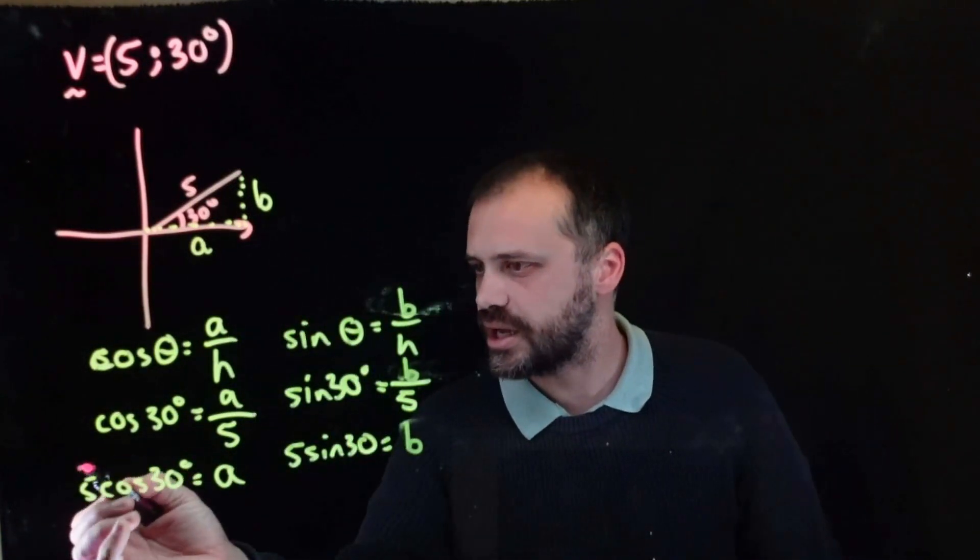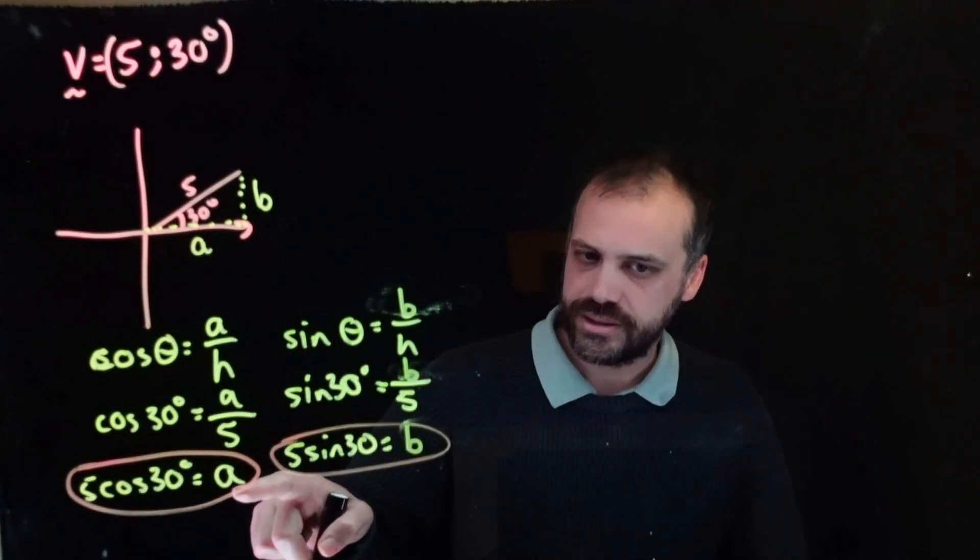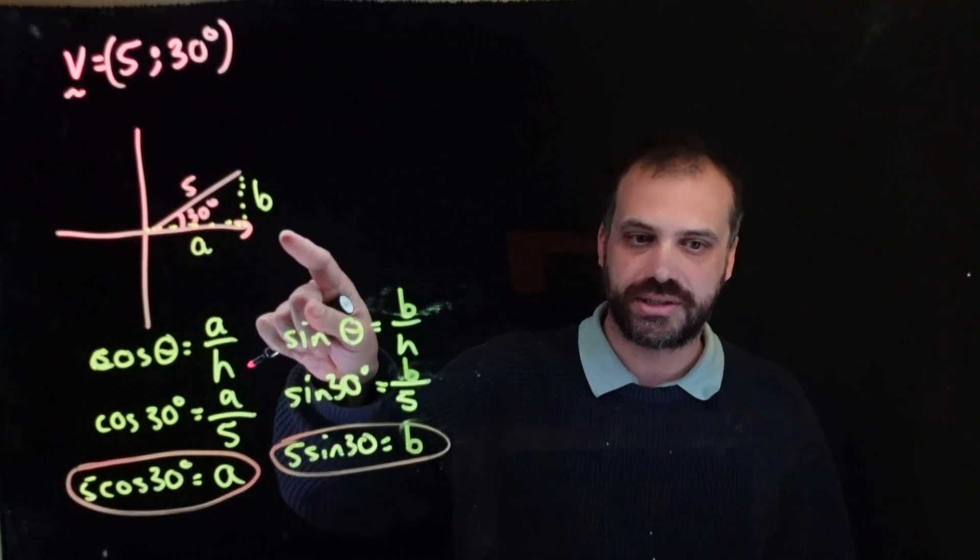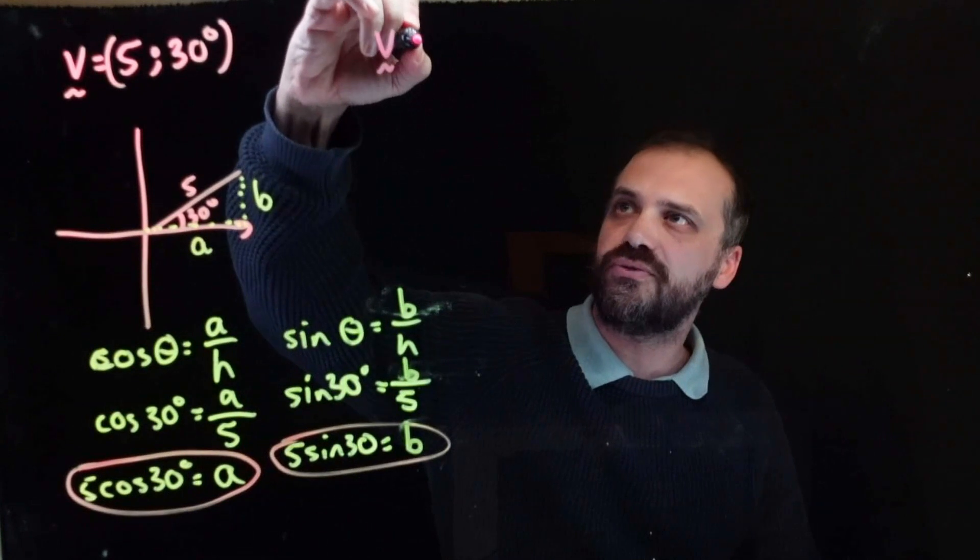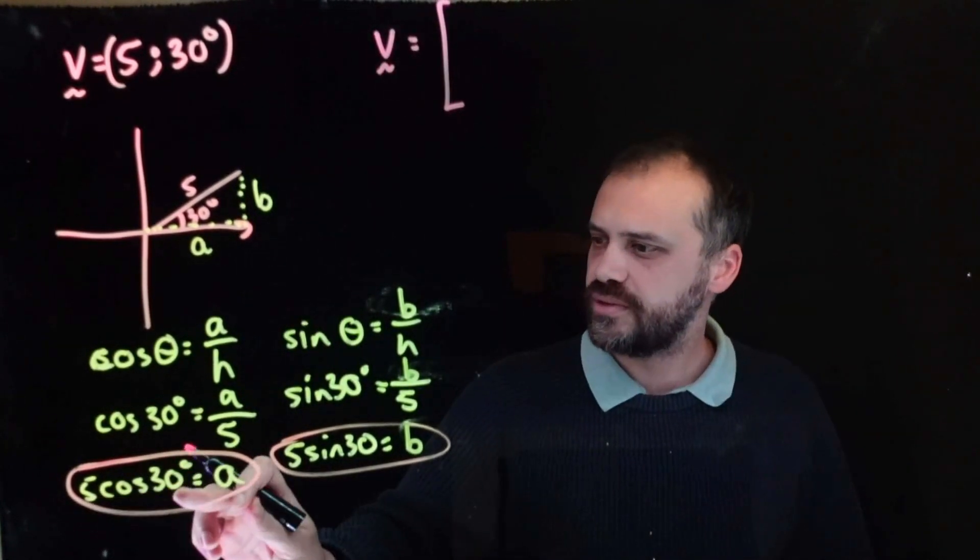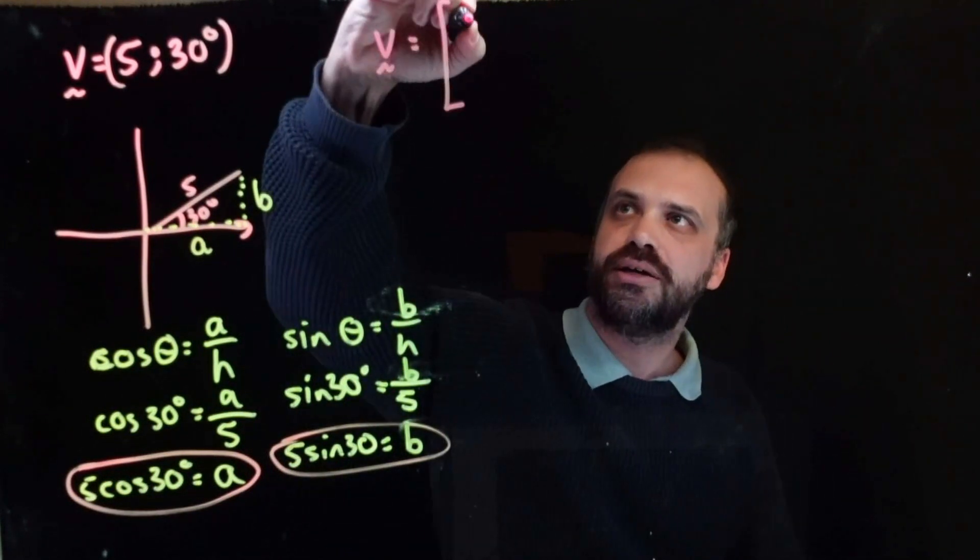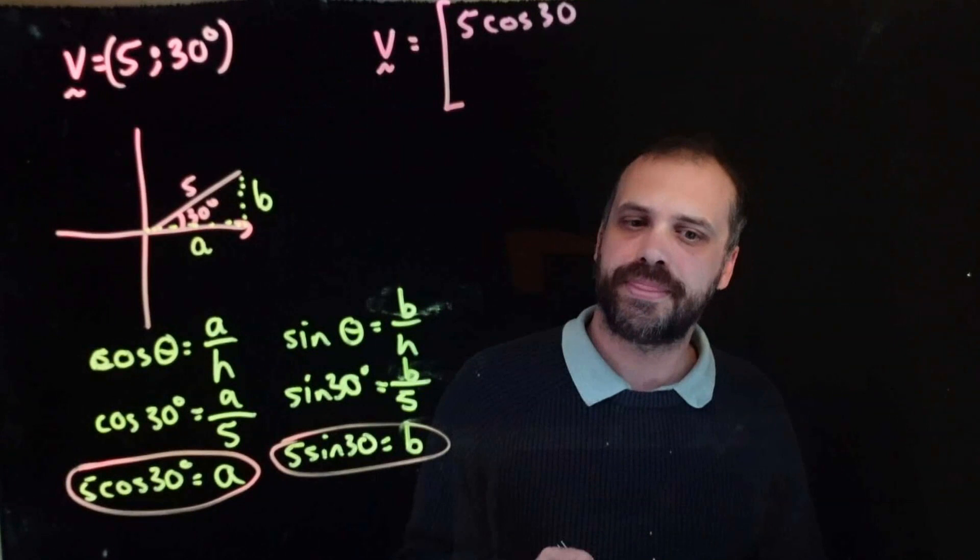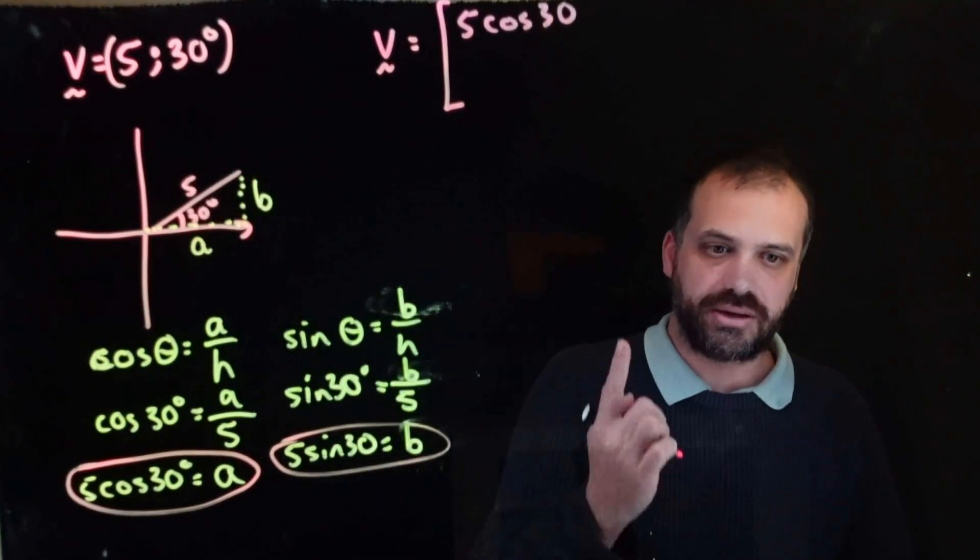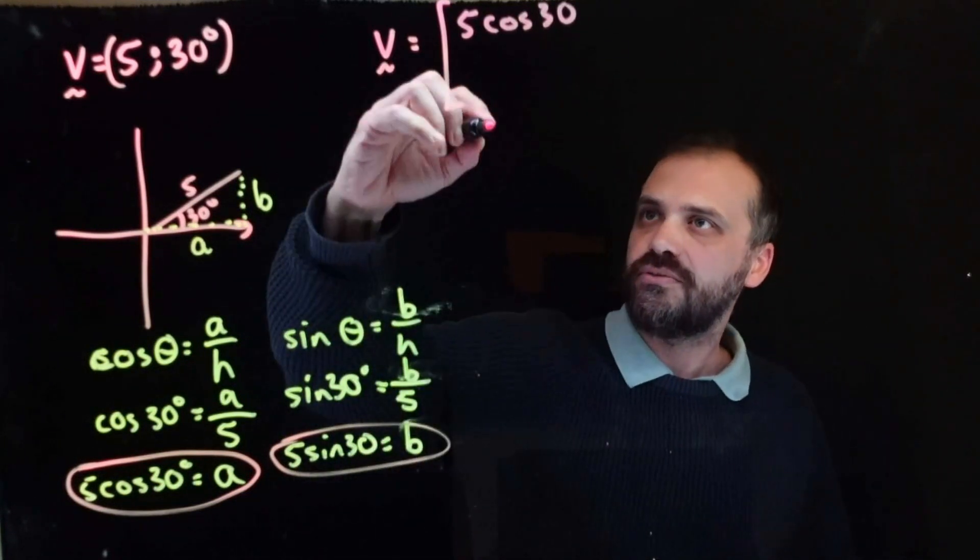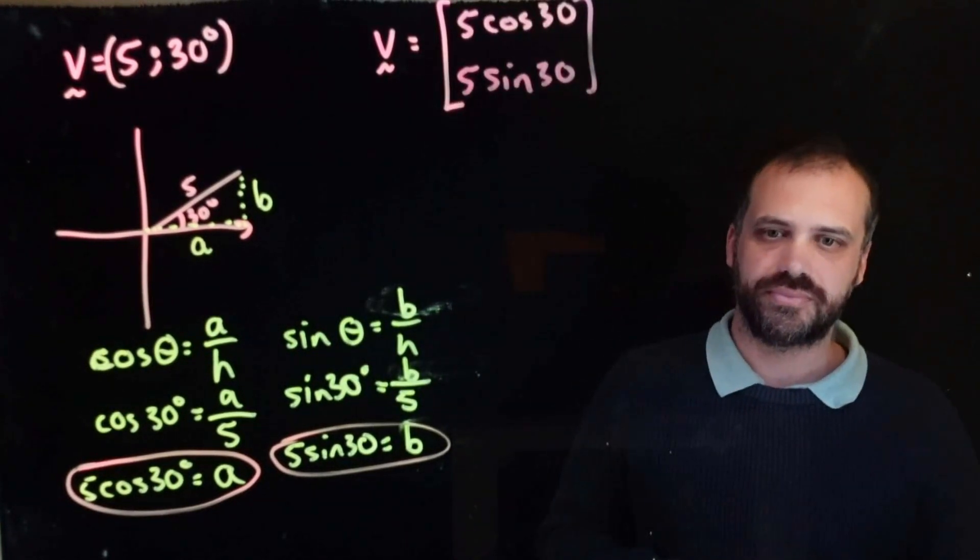All right, so these two things are really super awesome. Now, a is how far across it is. It's the first component in our component form. So, we know that v is going to be equal to whatever this value is here. And I'm going to resist typing it into my calculator. I'm just going to write it at 5 cos 30. This one here, this is how far up it is. This is our upwards component, 5 sin 30. Done.